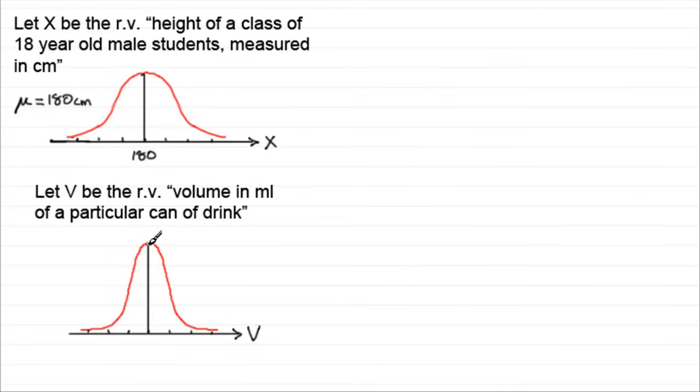The machines would be set to fill the cans with that particular volume. So let's suppose the mean mu in this case was, say for a can of beer, that would be say 330 milliliters. So we'd have 330 down here.